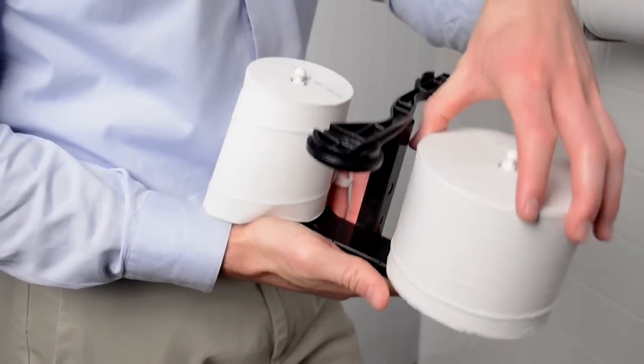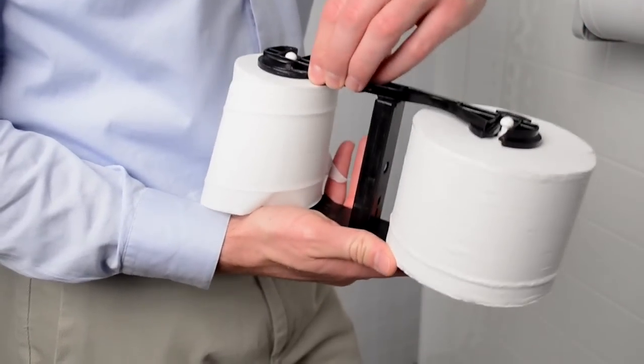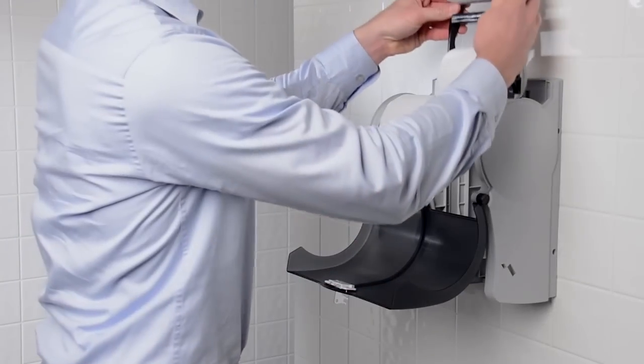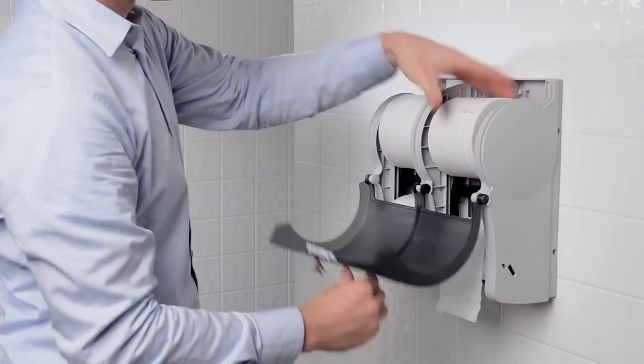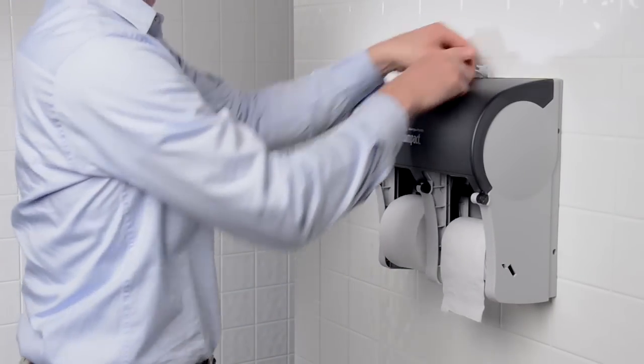Remember to keep the tissue flap pressed against the top roll. Finally, place the mandrel back into the dispenser and close the lid. The dispenser is now ready for use.